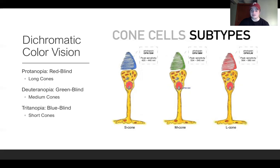Achromatopsia is actually a different disorder with other side effects, like nystagmus, irritability to light — they say that they have day blindness, meaning that light is really sensitive to their eyes. And of course, they can't perceive color.